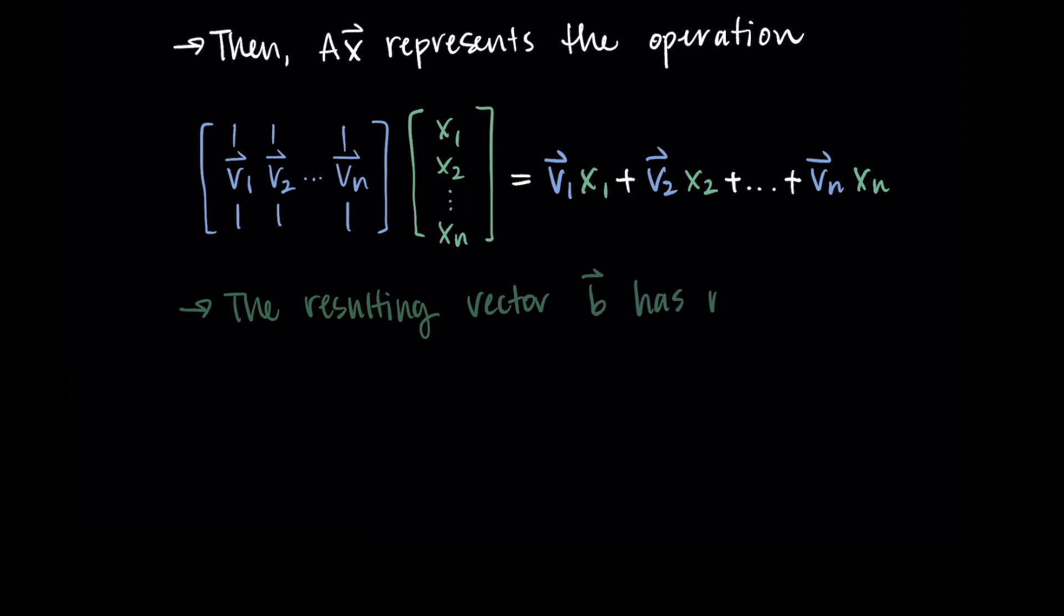And it's going to have m components. So it's going to be a vector since we're summing up a set of vectors, the vectors v1 through vn that we're taking a linear combination of.